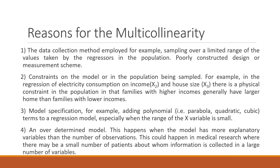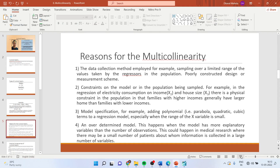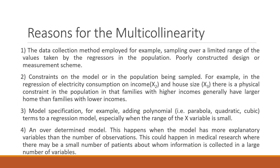The reasons for multicollinearity: first, the data collection method may be the problem — either the research design is poorly constructed or the measurement scheme is poor. Second, constraints on the model or in the population being sampled. For example, in the regression of electricity consumption on income and house size, there is a physical constraint in that families with higher incomes generally have larger homes — so higher income and larger homes are correlated with each other.